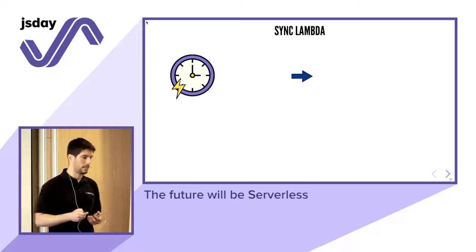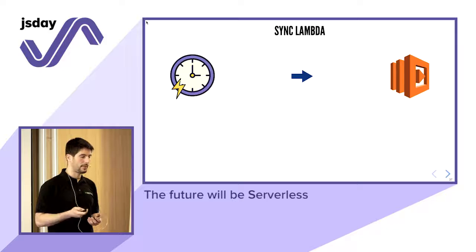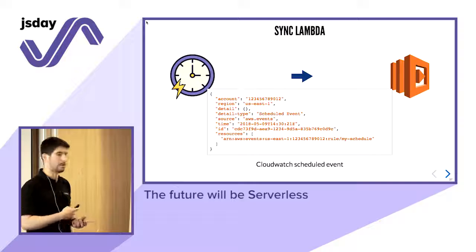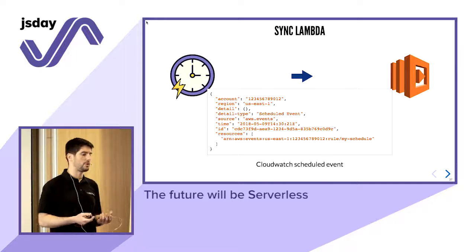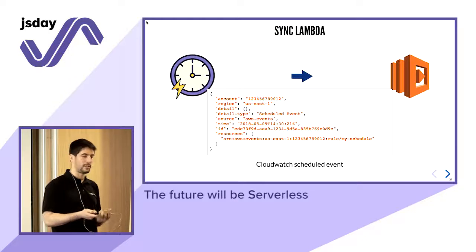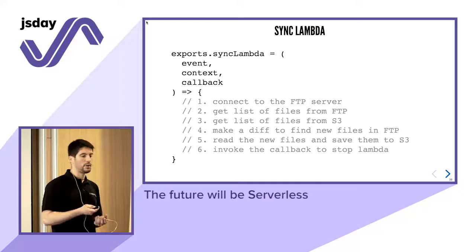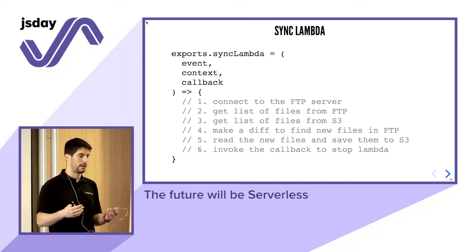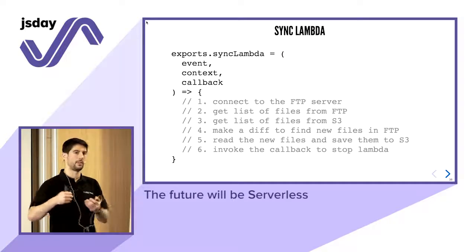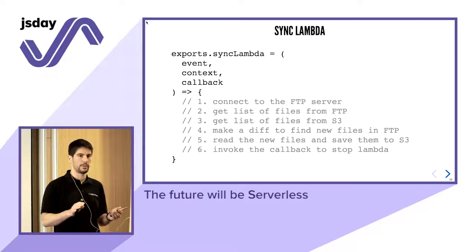The first Lambda has a schedule as its trigger, which invokes it passing a schedule event object. The content of this event is mostly not very relevant — you mainly just want something that triggers your Lambda every once in a while. The Lambda itself: first connect to the FTP server, get the list of files, compare with what's already in S3, make a diff to figure out the new files, read and stream them into S3, then invoke the callback to say the job is done and wait for the next cycle.